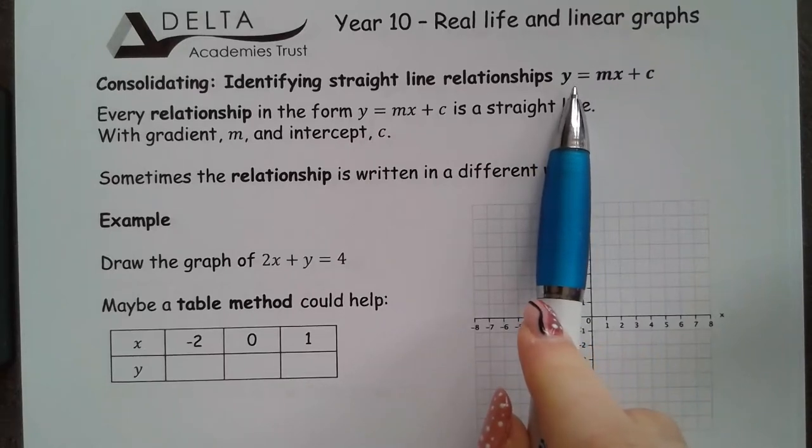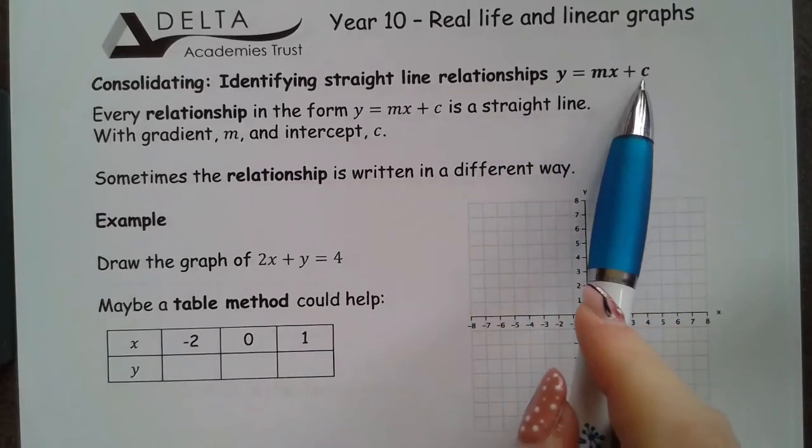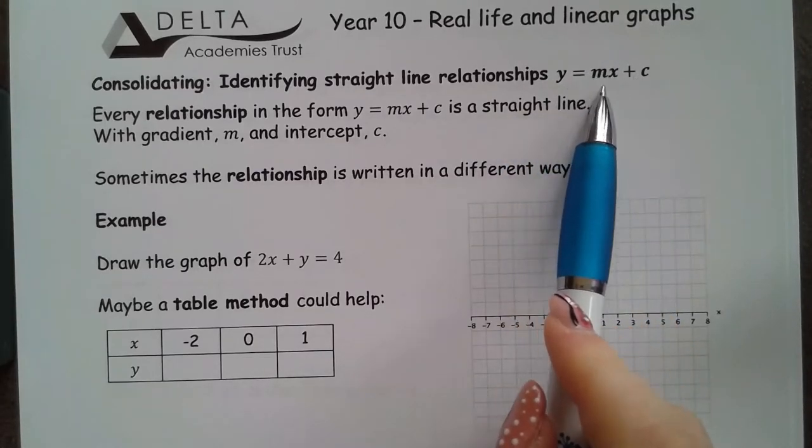we're going to have a look at what happens if a line is given in a slightly different format and we have to find out the information here, that gradient and the intercept in our y equals mx plus c.